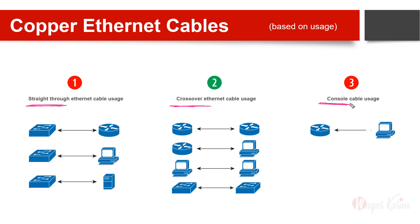A straight-through cable is used whenever the devices on two ends of the cable are different. For example, on one side it's a Layer 2 switch and on the other side it's a router. Again, on one side if it's a switch and on the other side if it's a PC, computer, or server.